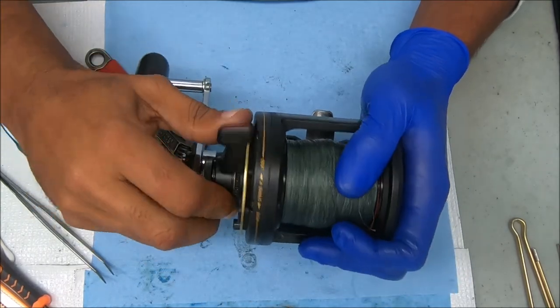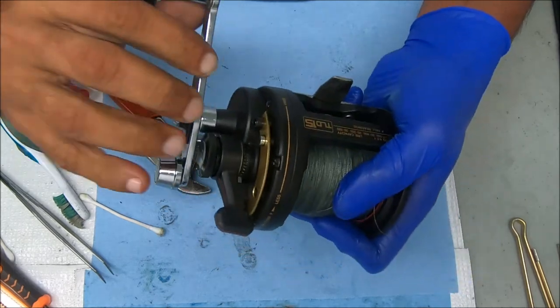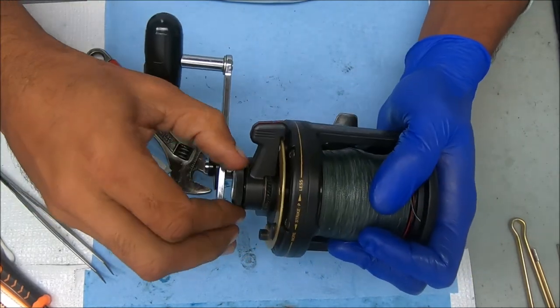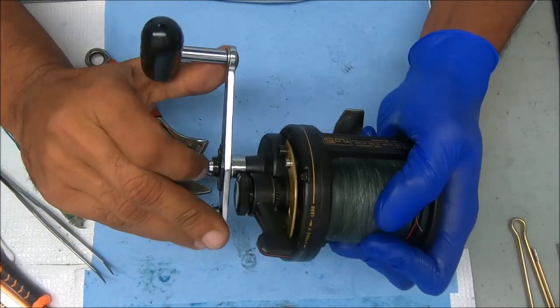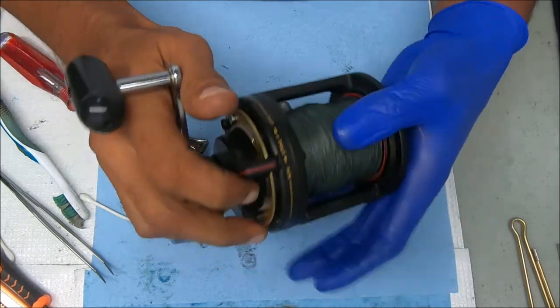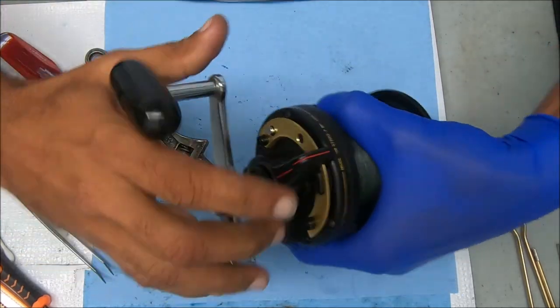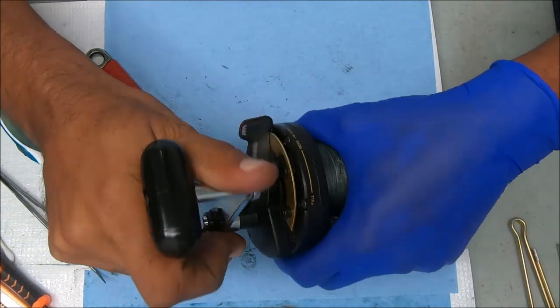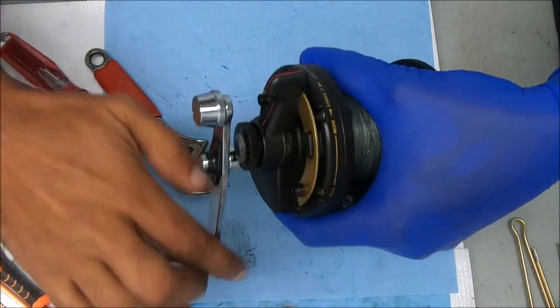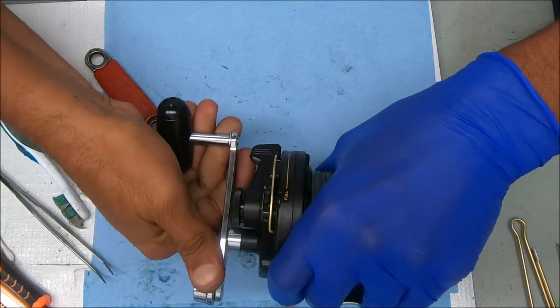All right, so there's free spool, there's drag, and now we're in business. Put too much drag on it. Let me get less drag on that. Now we have a functioning reel again with no skipping.